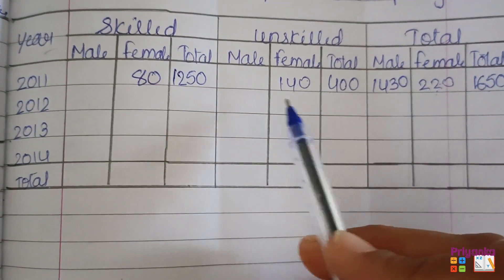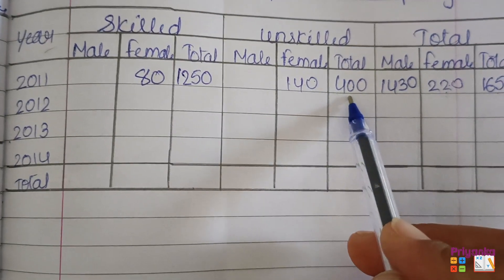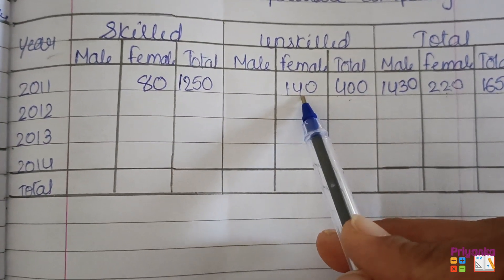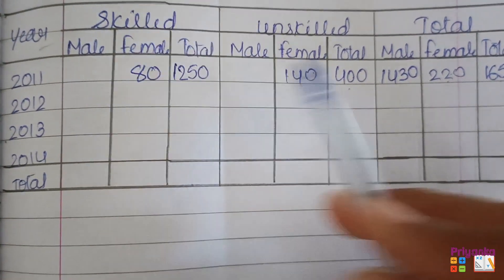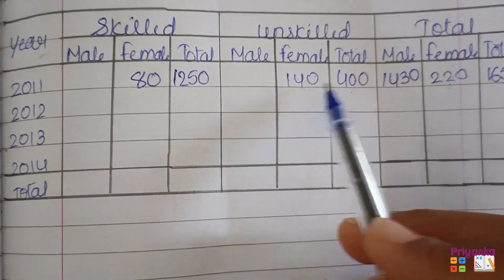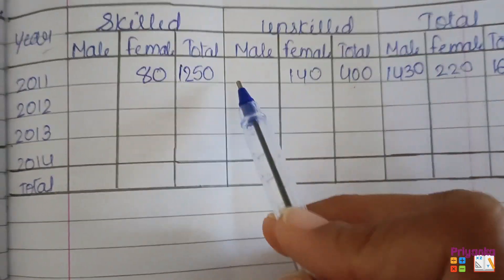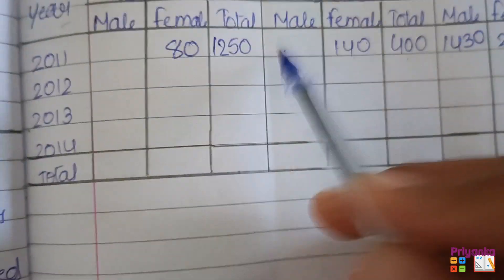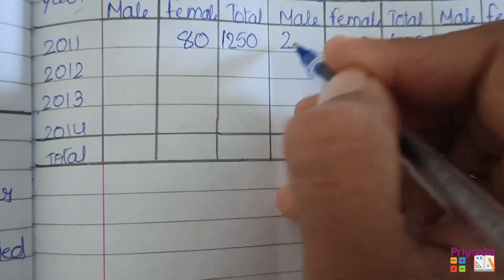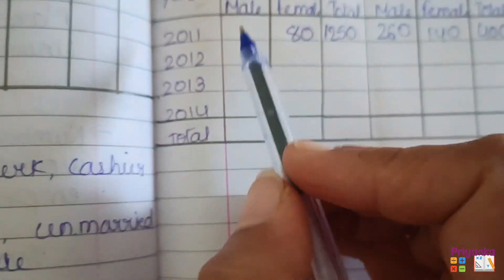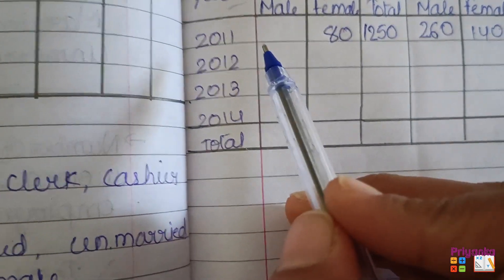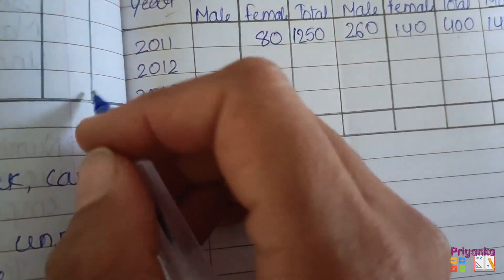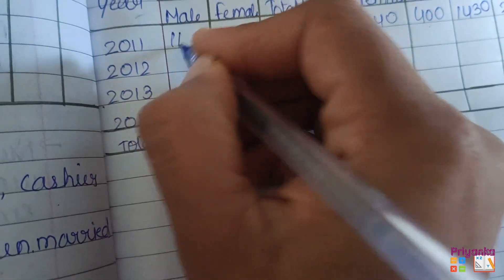The same thing we can do with the unskilled as well. 400 is the total number of unskilled workers. If we subtract the total number of females, we can get the males. 400 minus 140 females gives us the number of male unskilled workers, which is 260. In the same way, total minus female gives us 1170 for skilled males.